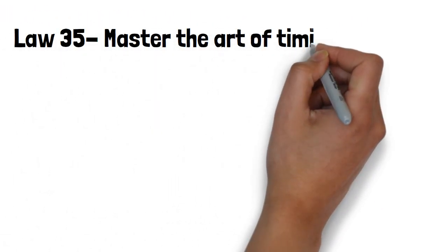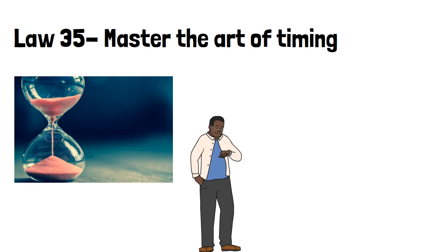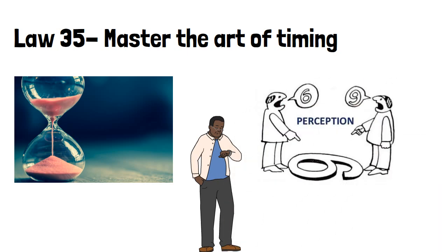Law 35, master the art of timing. Patience is a virtue. Never seem to be in a rush. Learn to be punctual and only strike when the timing is right. Because time is a perception, by mastering your emotions, you can make time seem to move more slowly and lengthen your perception of the future. This allows you to become more patient and to see the bigger picture.